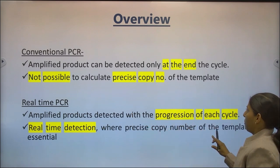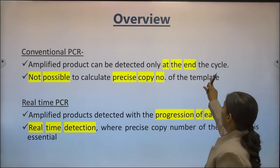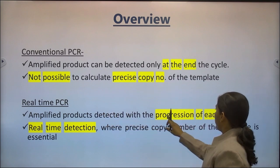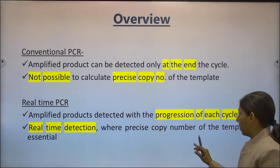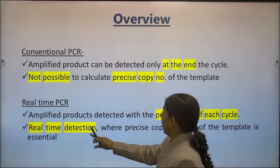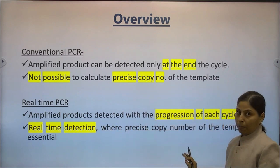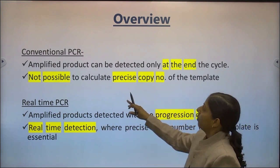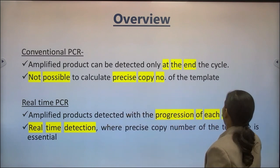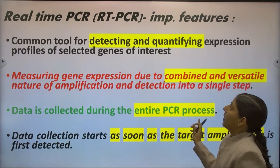In the overview, we know that in real-time PCR and conventional PCR there is a basic difference between the endpoints. In conventional PCR, we come to know the product at the end of the cycle, whereas in real-time PCR the amplified products get detected with the progression of each cycle, leading to real-time detection where the precise copy number of the template can be obtained. In conventional PCR, we are not able to calculate the precise copy number.